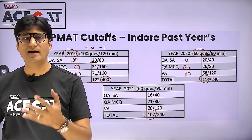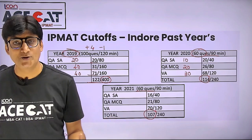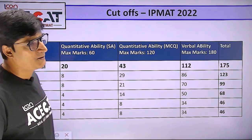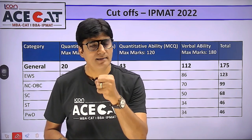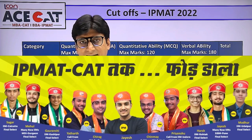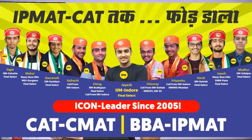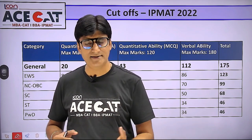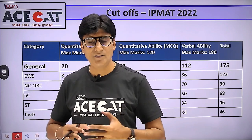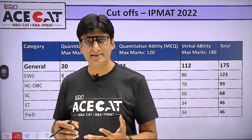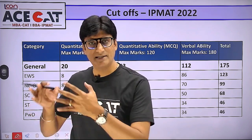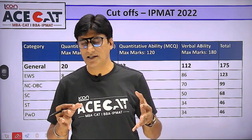In IPMAT 2022 the pattern changed considerably. The most notable change: number of questions rose from 60 to 90 — 45 English and 45 maths. In the Maths MCQ section, one set of five questions was based on reasoning, which was not very tough. Previously, papers used to include a set based on data interpretation, but this time it was a reasoning-based set.